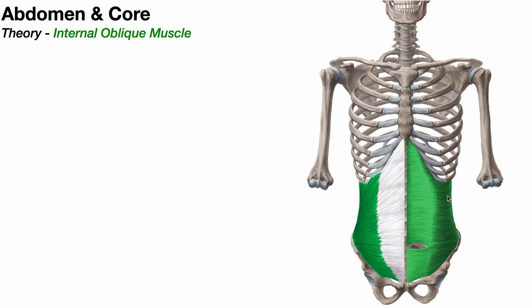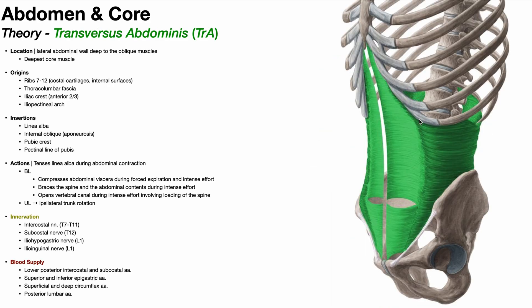Off to the side laterally, this is the muscle belly of the transversus abdominus. Looking at a side view, right here would be where the linea alba is, and coming off of that we have the aponeurosis of the transversus abdominus. Over here is the muscle belly, which sits in the lateral abdominal wall deep to the oblique muscles — it is the deepest core muscle of any of them.